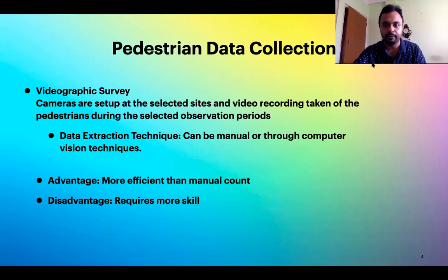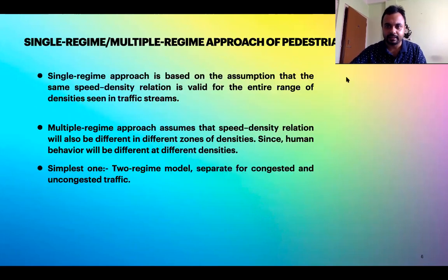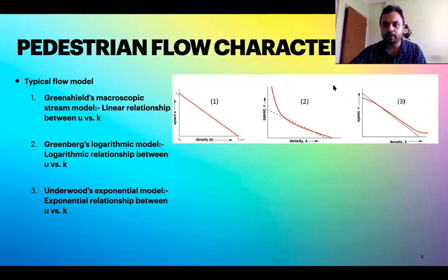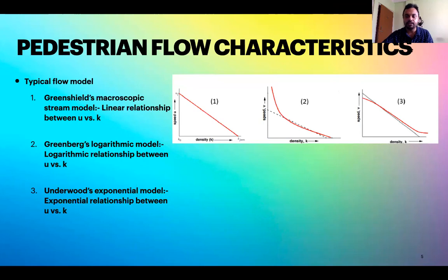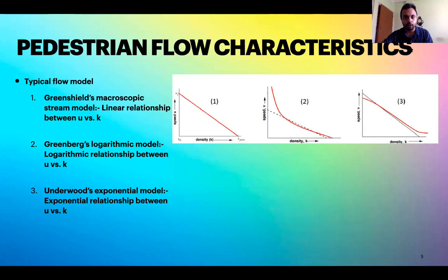When we talk about pedestrian flow characteristics, the same fundamental equation applies: q = uk, where flow equals speed multiplied by density. This is the backbone of traffic engineering. This equation, which we have seen for vehicular flow, is also applicable for pedestrians. The flow of pedestrians is similar to that of the flow of vehicles.